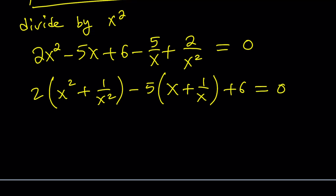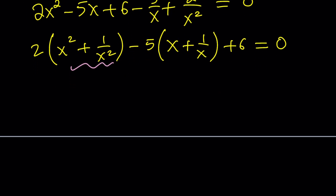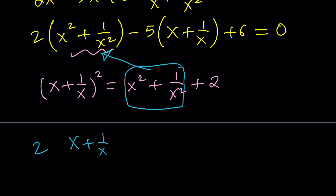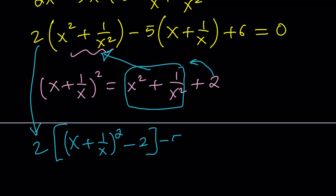By substitution, this can be turned into a quadratic. Let's rewrite x squared plus 1 over x squared. If you square x plus 1 over x, you get x squared plus 1 over x squared plus 2, because x and 1 over x are reciprocals. So we can write x squared plus 1 over x squared as x plus 1 over x squared minus 2, by subtracting from both sides. Then this will be multiplied by 2, minus 5 times x plus 1 over x plus 6 equals 0.